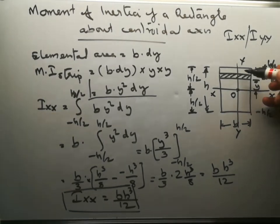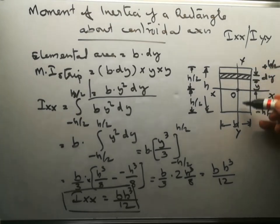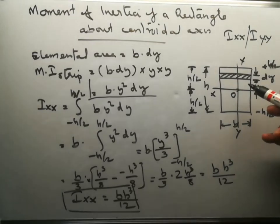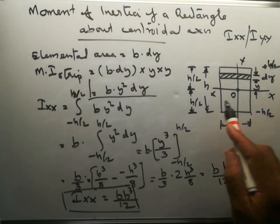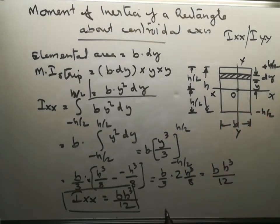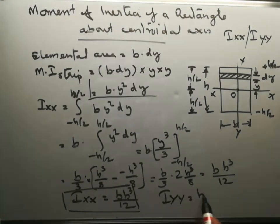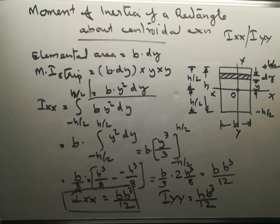Similarly, we can consider an elemental area in the horizontal direction and integrate the moment of inertia of that area from minus B/2 to plus B/2. We will get Iyy equal to HB cubed divided by 12.